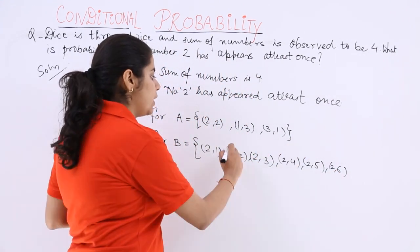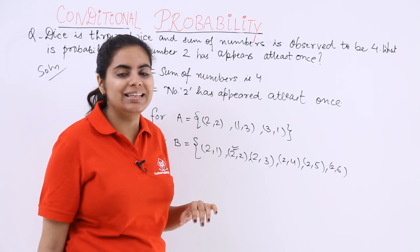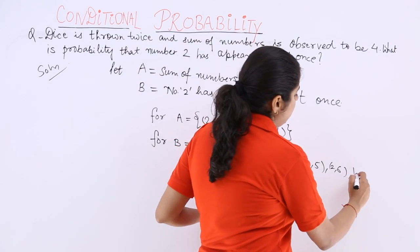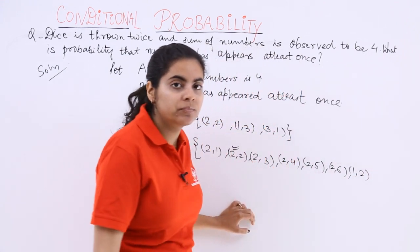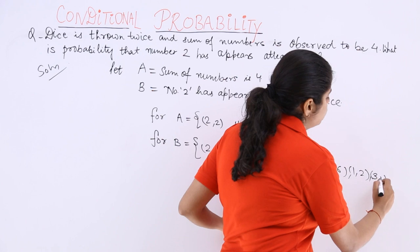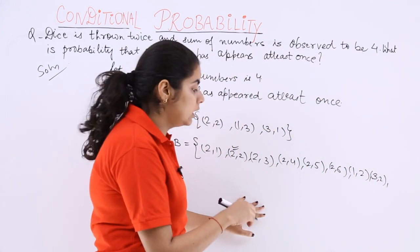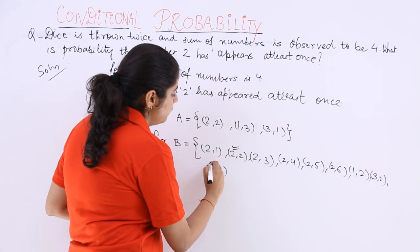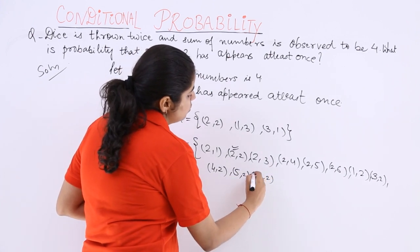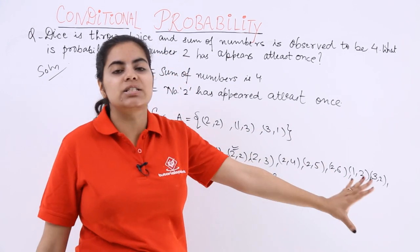Here two has appeared more than one time. Even we can take that. And what else? One, two can also come. Similarly, three, two can also come. Two, two we have already taken. Similarly, four, two can also come. Five, two can also come. And six, two can also come. Two has appeared at least once.